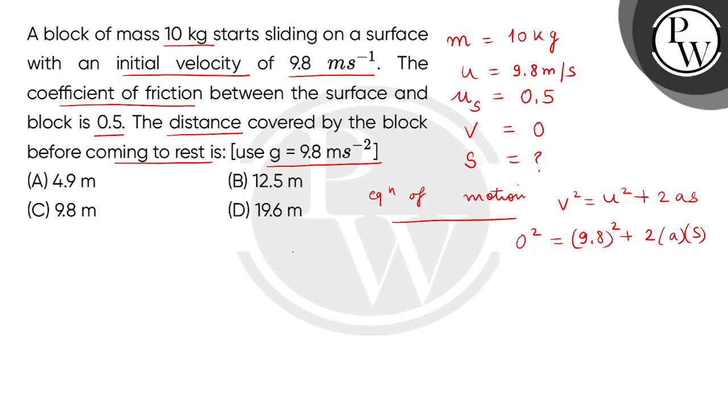Now when the block is placed on the surface like this, the weight Mg acts vertically downward. This is the normal reaction N. And when it moves on the right side, it will have force of friction on the left side.